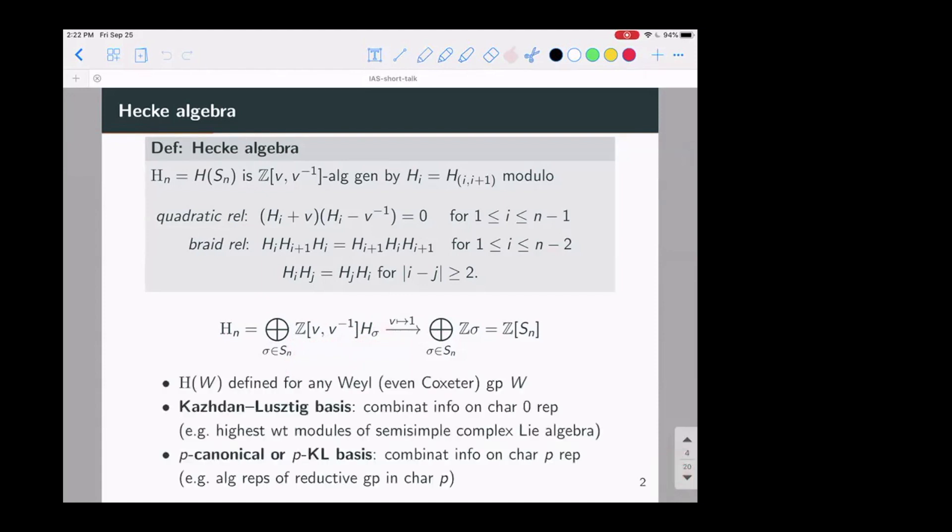So this can be defined for any Weyl group or even Coxeter system. And in addition to the standard basis, there is a very important basis called the Kazhdan-Lusztig basis, which encodes combinatorial information on representation theory of the theoretic objects in characteristic zero. So for instance, you can take a semi-simple complex Lie algebra and its highest weight modules. And it's known that the characters of these things can be given in terms of Kazhdan-Lusztig polynomials. So that's a quite old story by now.